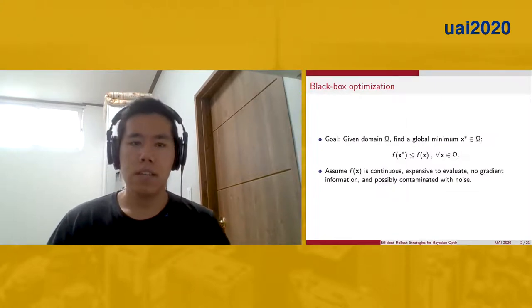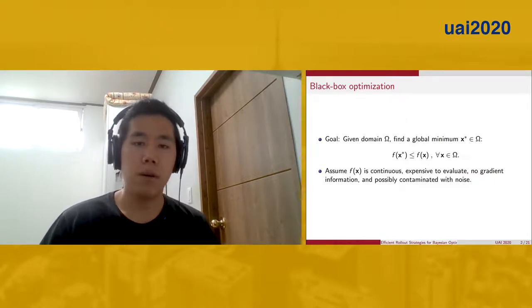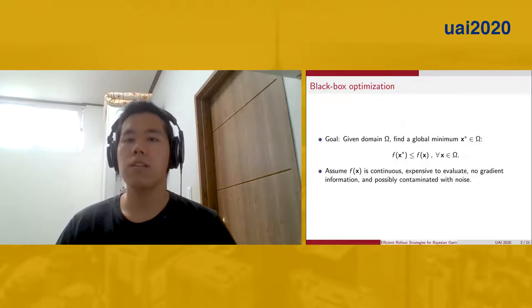Before we dive into the details, let's talk about black box functions first. The goal in black box optimization is to find the global minimum x star whose value is smallest in a domain omega.